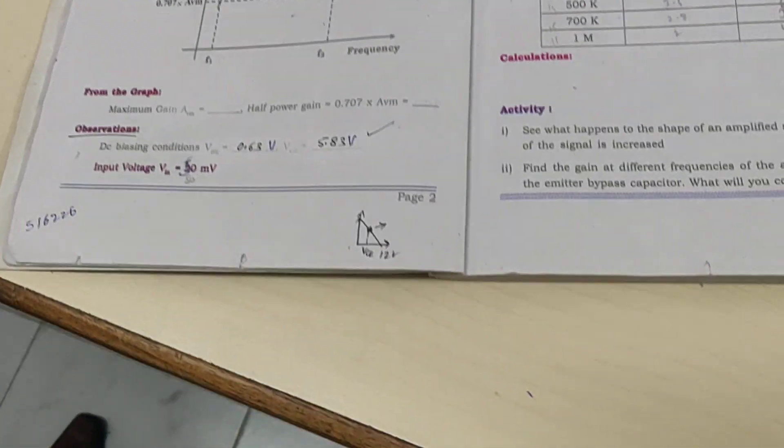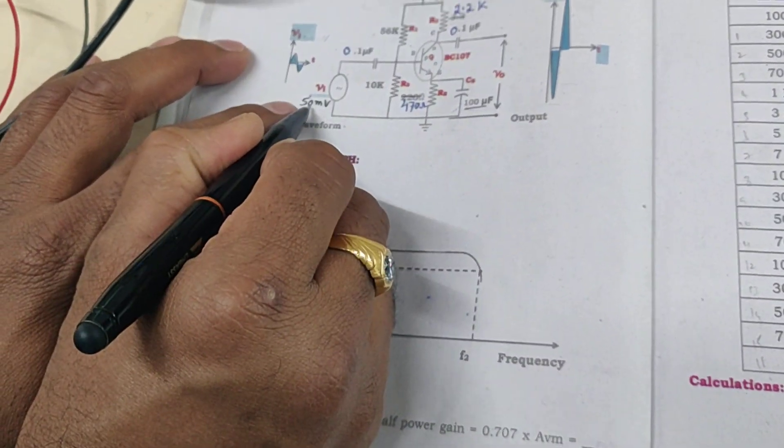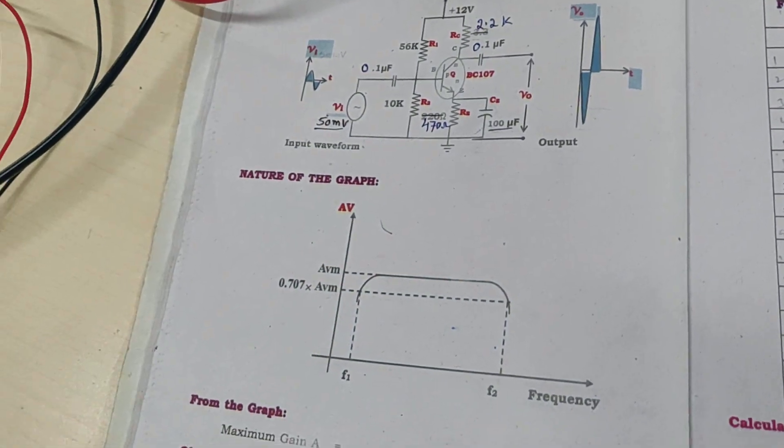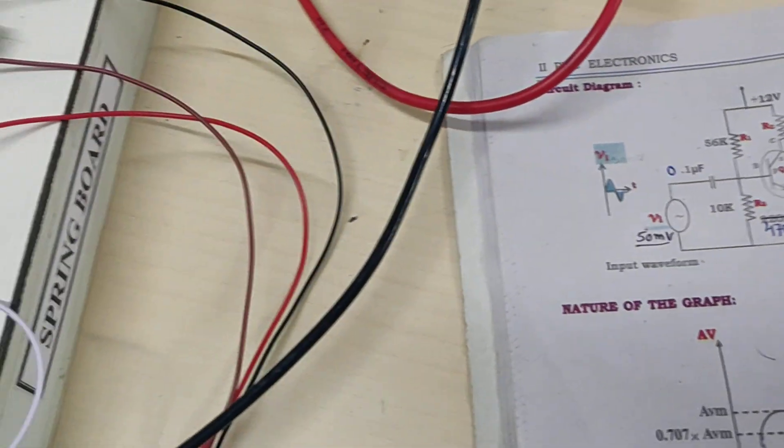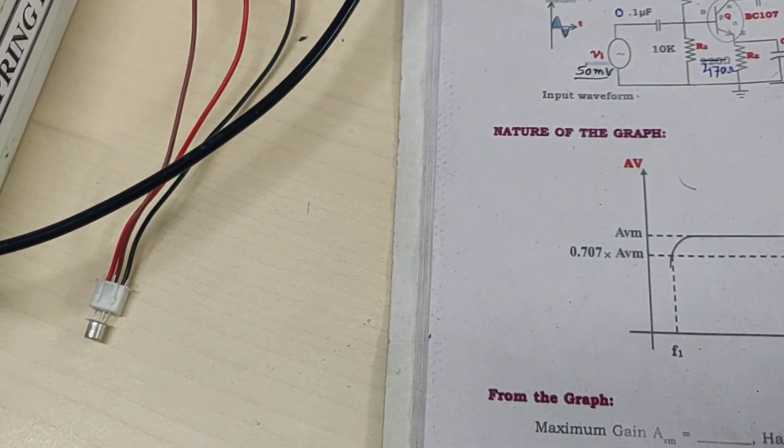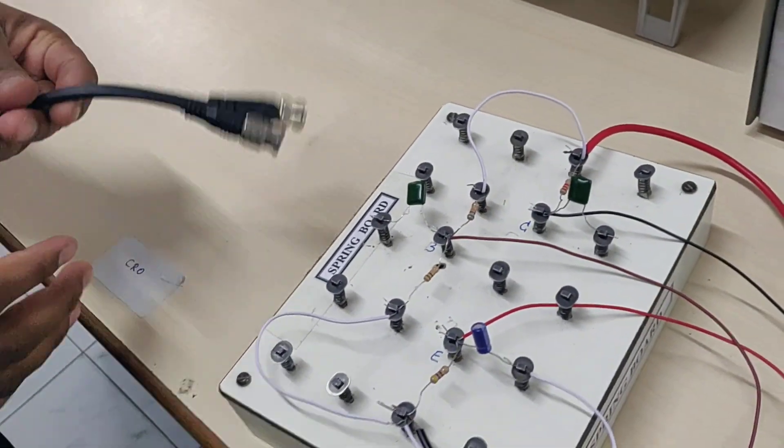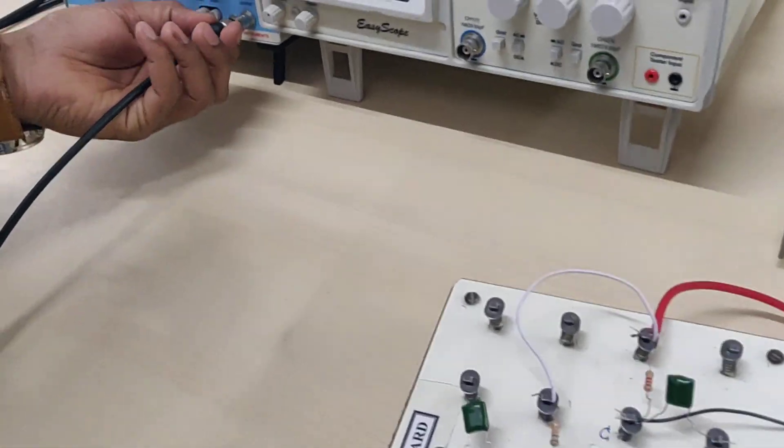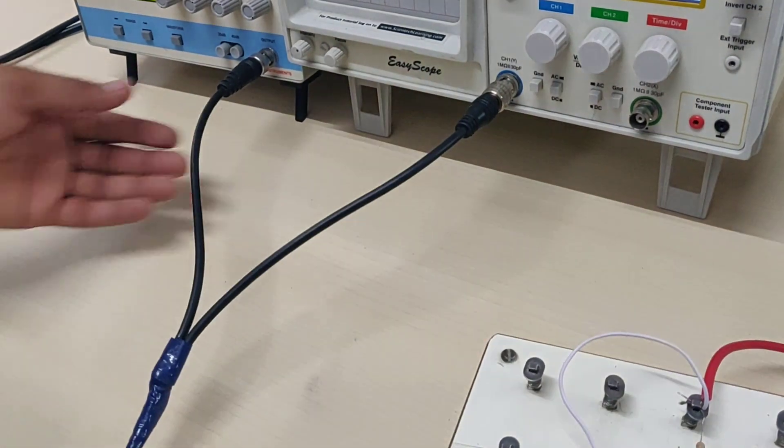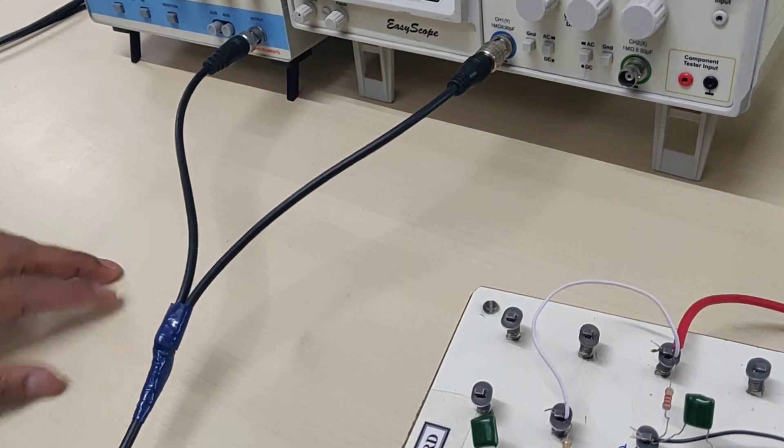Now we shall set the input signal using the signal generator. I need to keep 50 millivolts, which is a weak signal. Let me set the voltage. These are called BNC connectors. We are using dual BNC. I am connecting the signal generator to the CRO just to measure the amount of input voltage I am applying here.